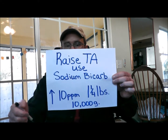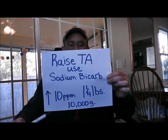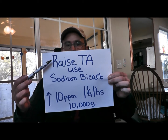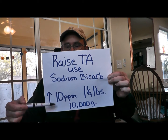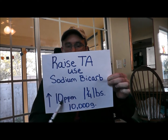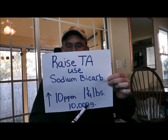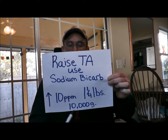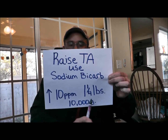Another thing is you may just not be using enough bicarb to raise your alkalinity. To raise your total alkalinity using sodium bicarb, raise it 10 parts per million per 10,000 gallons using one and a quarter pounds. If you want to raise it 20 parts per million, simply double the amount. If it's a 20,000 gallon pool and you want to raise it 10 parts per million, double the gallons and simply double the amount. So that could be an issue.